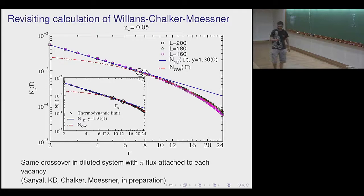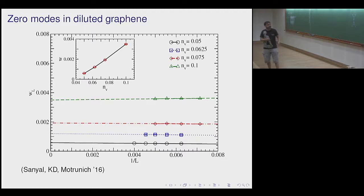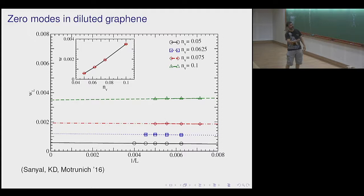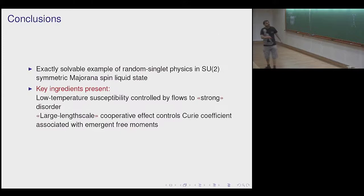When we look in detail at diluted graphene, we find a non-zero thermodynamically significant density of zero modes — about half a percent — which is concentration dependent. More vacancies give more zero modes. We find the same thing happens in the Kitaev model and the numbers are very similar; flux attachment doesn't seem to change the density of zero modes much. That's the clue to what's going on.